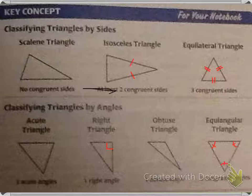Scratch that out — it's just two congruent sides, not 'at least' two congruent sides. And an equilateral triangle has three congruent sides.